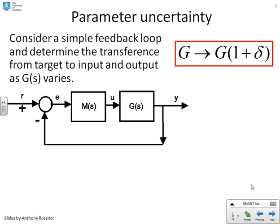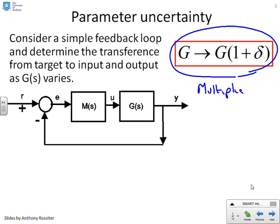First then, parameter uncertainty. We're going to represent the parameter uncertainty using what's often called a multiplicative model. There are others. You can use additive models. But here we're going to say that the real process is the model times 1 plus delta, where delta is assumed to be some small number.